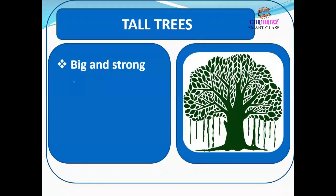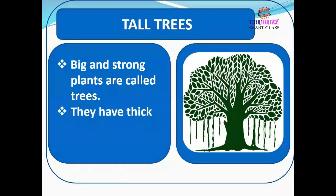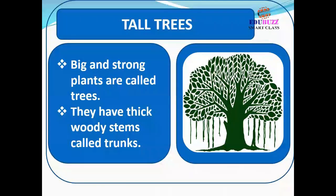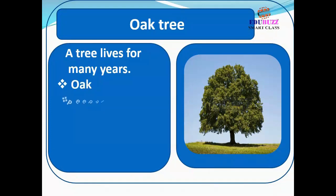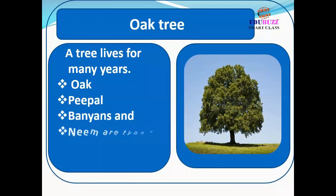Big and strong plants are called trees. They have thick woody stems called trunks. A tree lives for many years. Banyan and neem are types of trees.